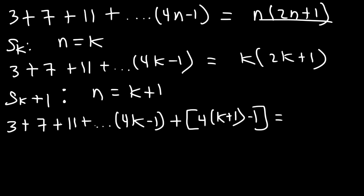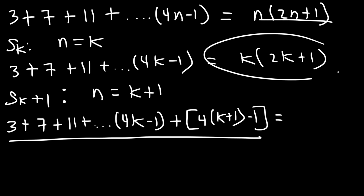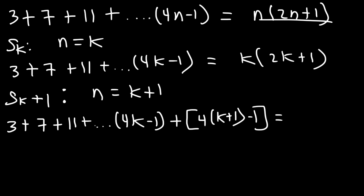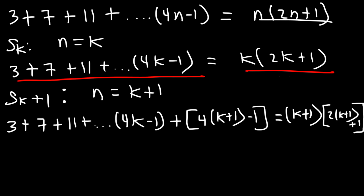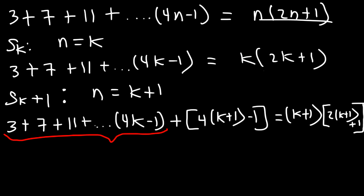Now on the right, this entire sum should equal this expression if we replace K with K plus 1. So everywhere you see a K, replace it with K plus 1: it's going to be K plus 1 times 2 times K plus 1 plus 1. Now we need to prove that the left side and the right side are equivalent to each other. Notice that this expression — 3 plus 7 plus dot dot dot plus 4K minus 1 — is equal to K times 2K plus 1, so we can replace it with K times 2K plus 1.